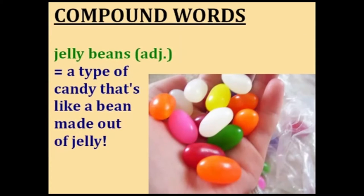Jelly beans — this one's pretty self-explanatory. A type of candy that's like a bean made out of sweet jelly is a jelly bean. You can see what they look like in the picture.